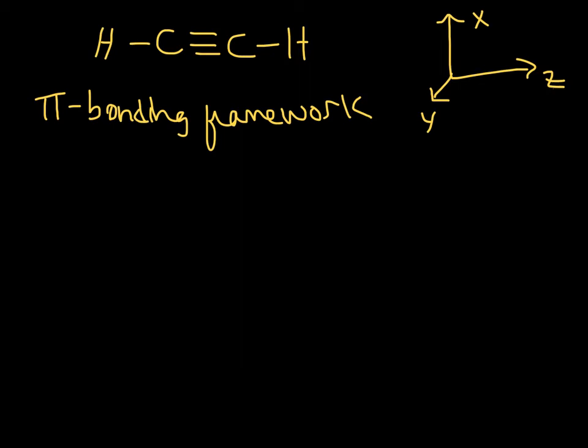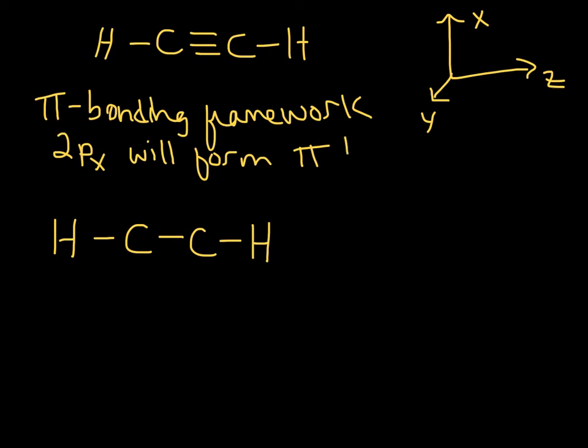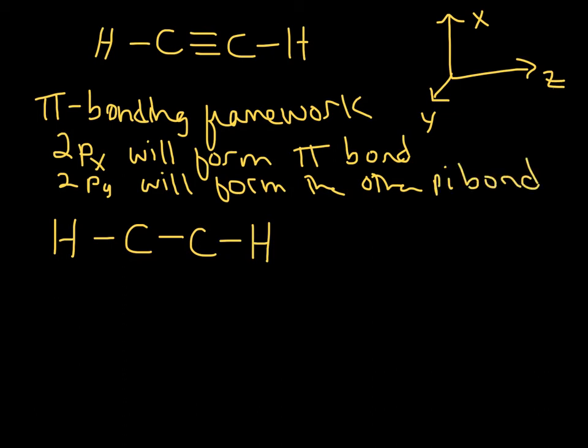Let's draw the pi bonding framework. Usually it's easier to draw two different drawings instead of trying to put the whole thing together. There are actually two pi bonds between these two carbons. And I'm going to draw them separately with each orientation of the p orbitals. The 2px, they're going to bond together in a pi bond. And they have to have the same orientation in order to form a pi bond. So the 2px will form one pi bond, and the 2py will form the other.